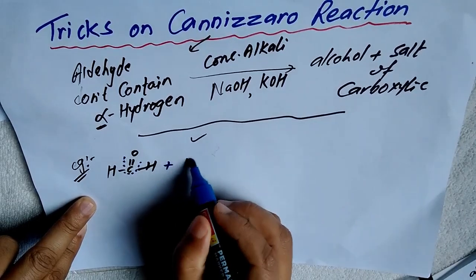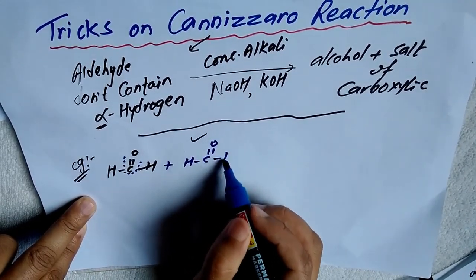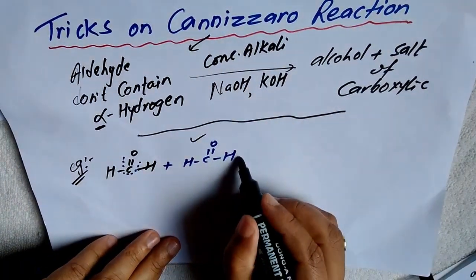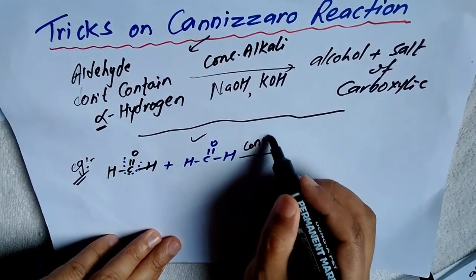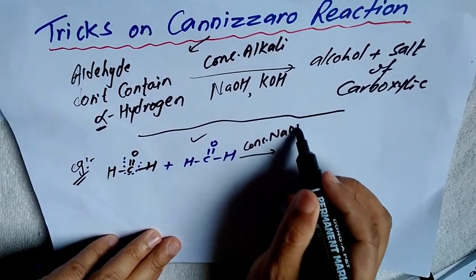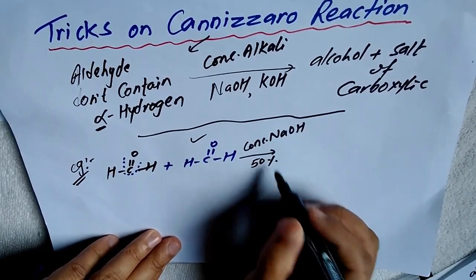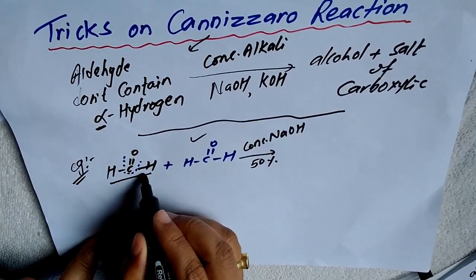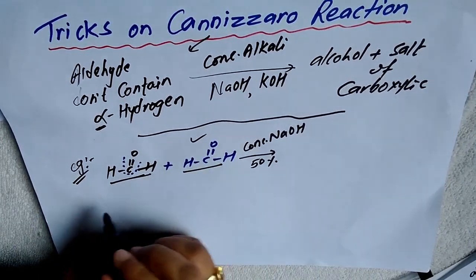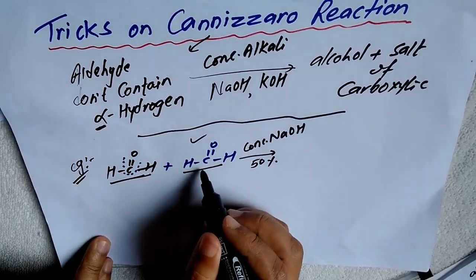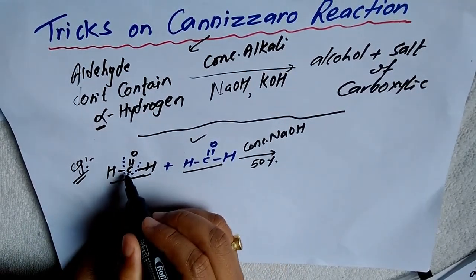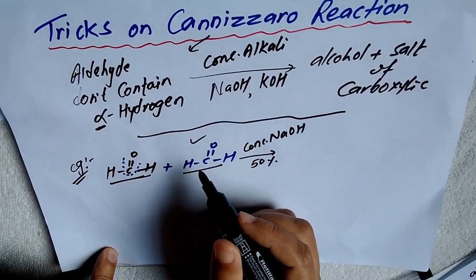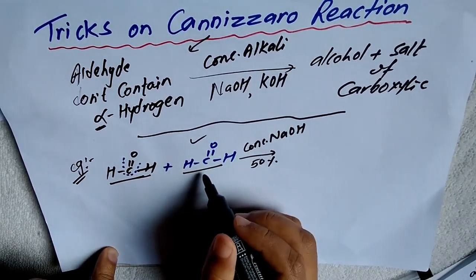When formaldehyde reacts with another molecule of the same aldehyde — which does not contain alpha hydrogen — with 50% concentrated NaOH, one aldehyde is oxidized and another aldehyde is reduced. One carbon is oxidized and another carbon is reduced, so it is called a self oxidation-reduction or disproportionation reaction.